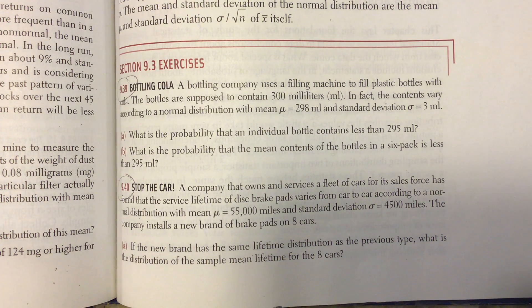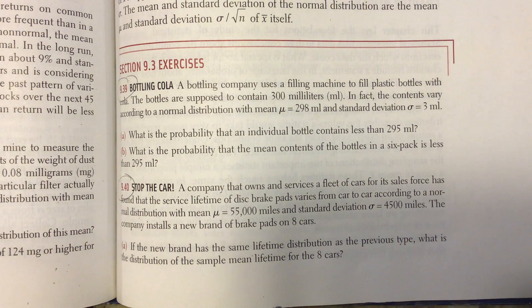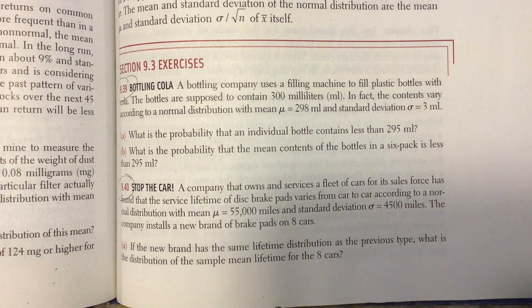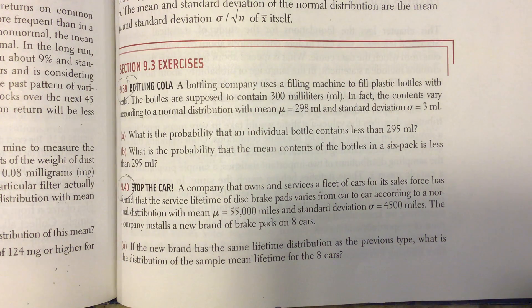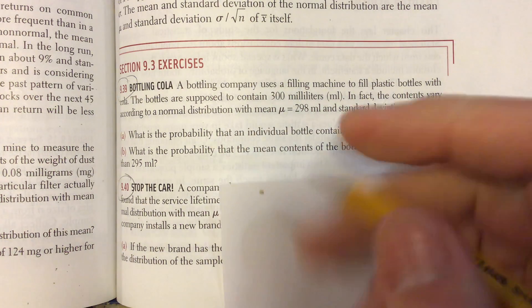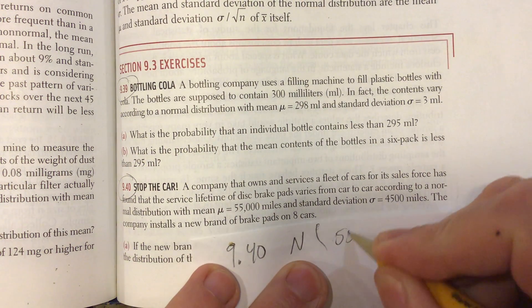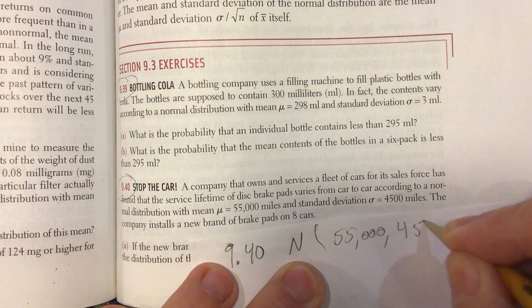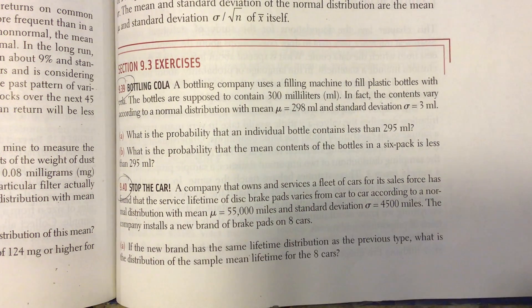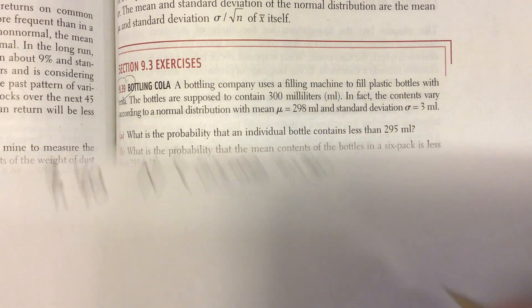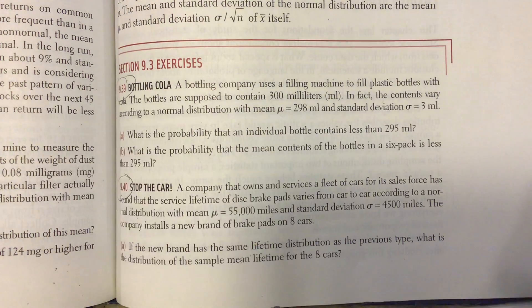Problem 9.40: The company that owns and services a fleet of cars has found that the service lifetime of disc brake pads varies from car to car according to a normal distribution with a mean of 55,000 miles and standard deviation of 4,500 miles. The company installs a new brand of brake pads on eight cars. So we have a normal distribution: N(55000, 4500), and n equals 8.